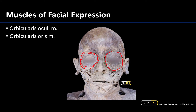The muscle surrounding the lips or the oral fissure region will be the orbicularis oris. These are sphincteric muscles, meaning that when they contract, they will close — they'll either close the eye or close the mouth. So these are the two sphincteric muscles.